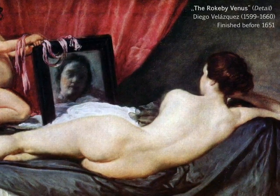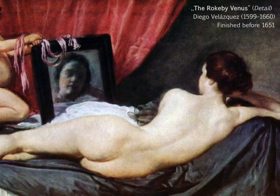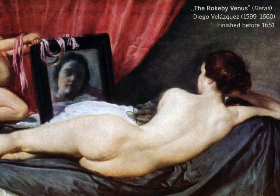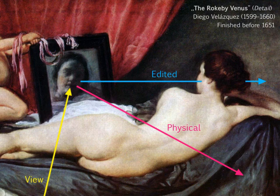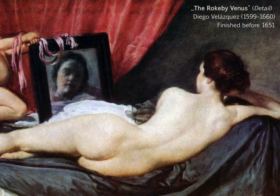One famous example from traditional art is the painting, The Rokeby Venus. In this painting, the reflection of the face in the mirror is physically incorrect. We can reproduce this effect with our system.